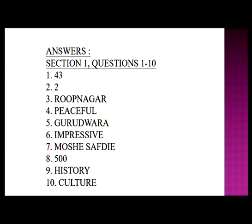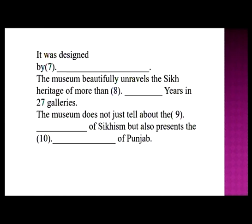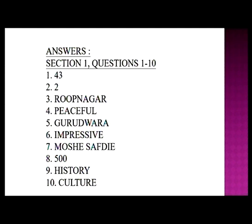The answer is repeated twice or maybe thrice so that you get the spellings. Next was question 8 — the heritage of more than 500 years in 27 galleries. It was how many years? Over 500 years. The Sikh story is explained in 27 galleries. The next answer: the museum does not tell just about the history but also the culture of Punjab — the culture and history of the people of Punjab and Sikhs. Here are the first 10 questions answered.